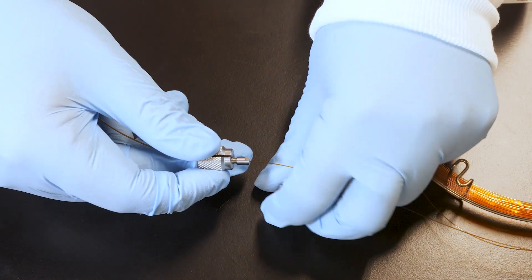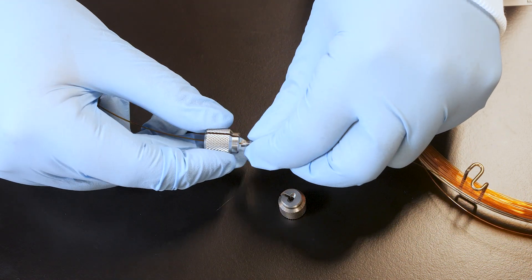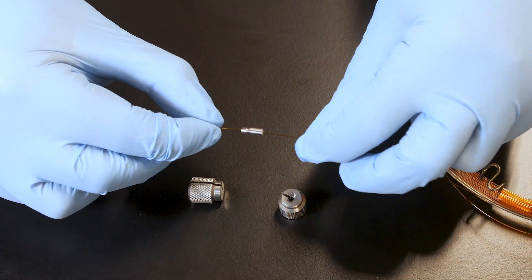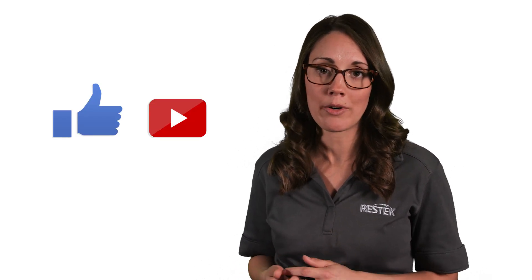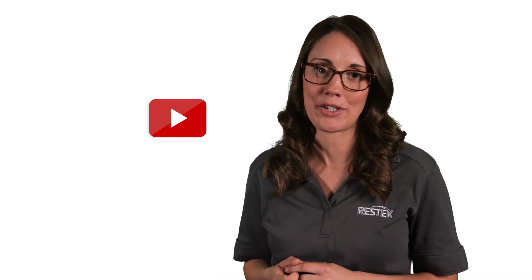Finally, remove the fitting tools from the male and female micro connectors and the column. And it's as simple as that. That's how you connect fused silica columns using a siltite micro union. Be sure to like and subscribe for more helpful content and thank you for joining us for this Restek tip.